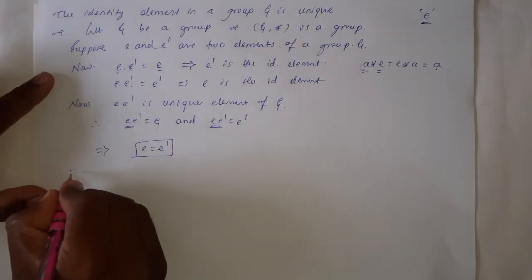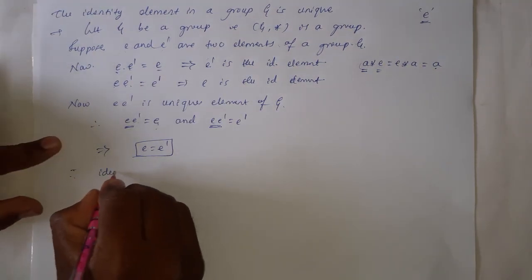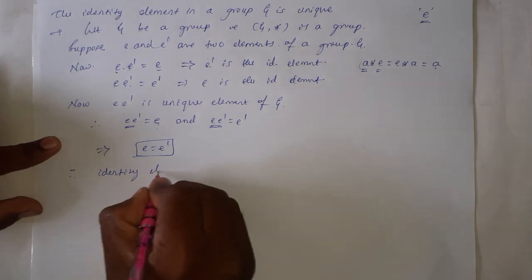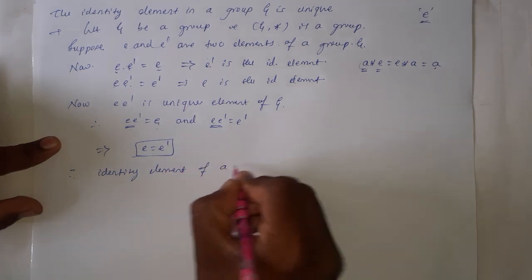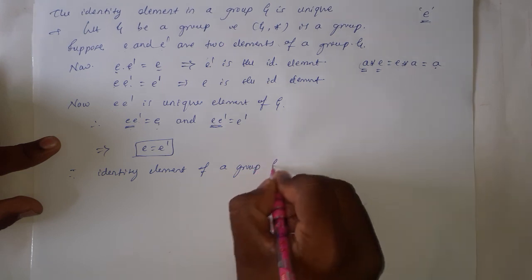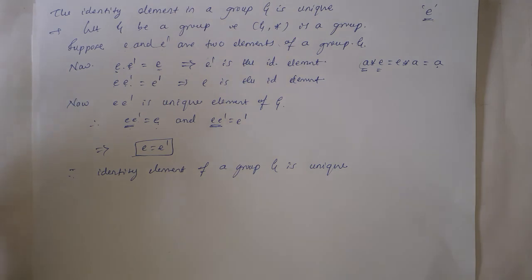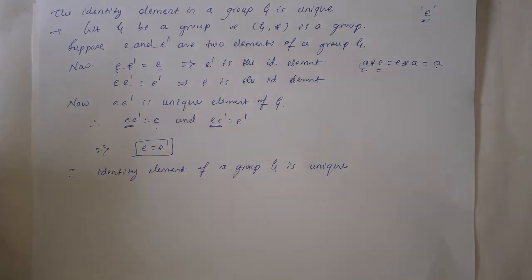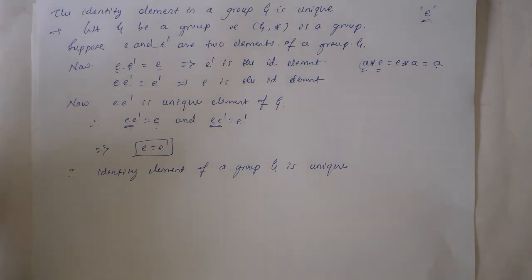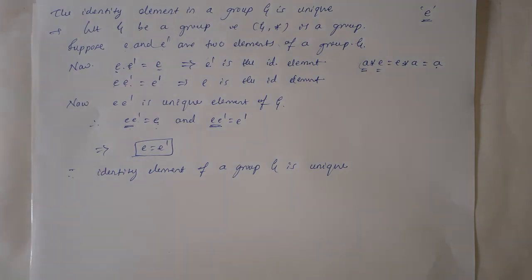Therefore the identity element of a group G is unique. There will not be two identity elements in any group; there will be a single identity element, denoted by E. We can represent it by any symbol, but that identity element must be unique. That is the meaning of this theorem.